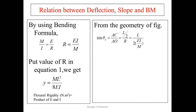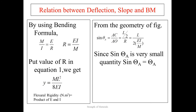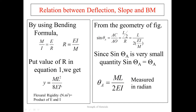From the geometry of the figure, sin(θ_A) = AC/AO = (L/2)/R = ML/2EI. Since θ_A is very small, sin(θ_A) ≈ θ_A, so we get θ_A = ML/2EI. This is the relation between slope and bending moment, measured in radians. The product E × I is the flexural rigidity, measured in Newton·meter².